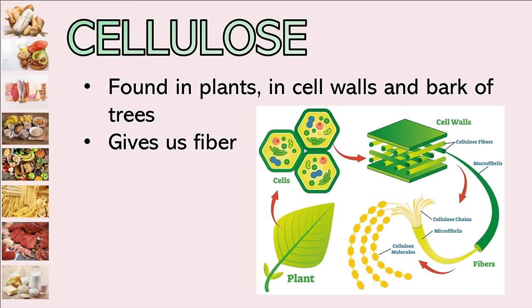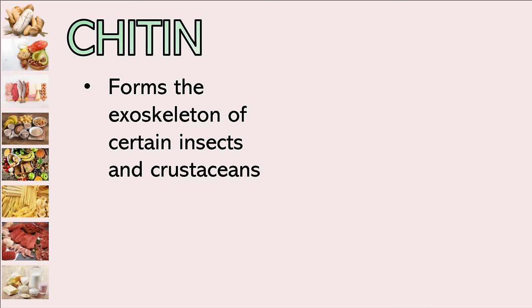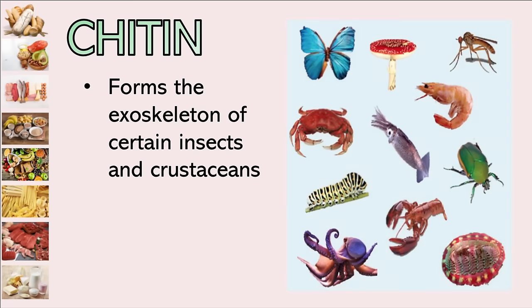The last example of polysaccharide is chitin. Chitin forms the exoskeleton of certain insects and crustaceans — it is also a polysaccharide.